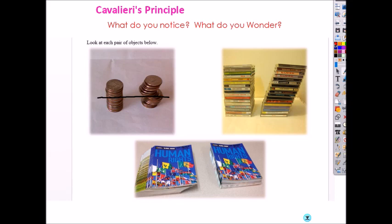Look at a stack of CD cases. Do they have the same height? Yes, same height. And would they have the same cross-section if you cut it horizontally at the same height? Yes. Then by Cavalieri's principle they have the same volume. So there are two conditions: it has to have the same height and the same cross-section at the same height.